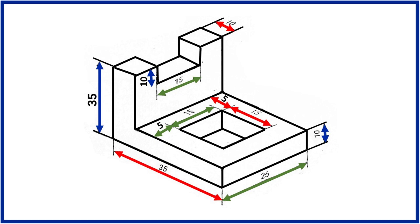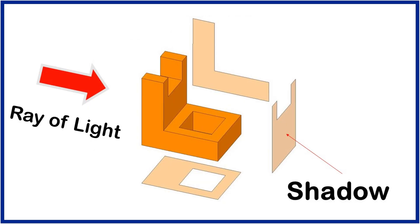First we will understand the concept. Assume that this part is in 3D space. Assume that rays of light are coming from the left side where the part is located. All rays are perpendicular to the part surface as shown. This surface will not transmit these rays and they will create resistance.